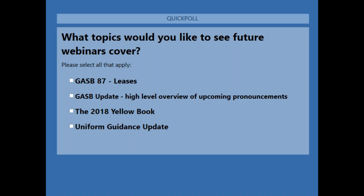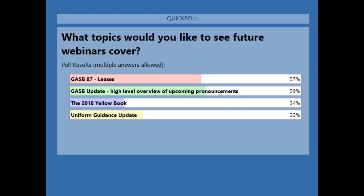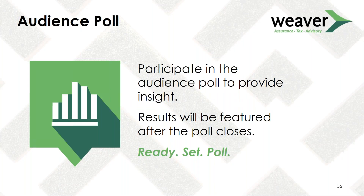Final poll: What topics would you like future webinars to cover? A, GASB 87 addressing leases. B, a GASB update — high level overview of upcoming pronouncements. C, the 2018 Yellow Book. Or D, uniform guidance update. Results: a GASB update was the winner at 59%, with GASB 87 a close second at 57%. We'll take that into consideration as this is the first in our series of government webinars.